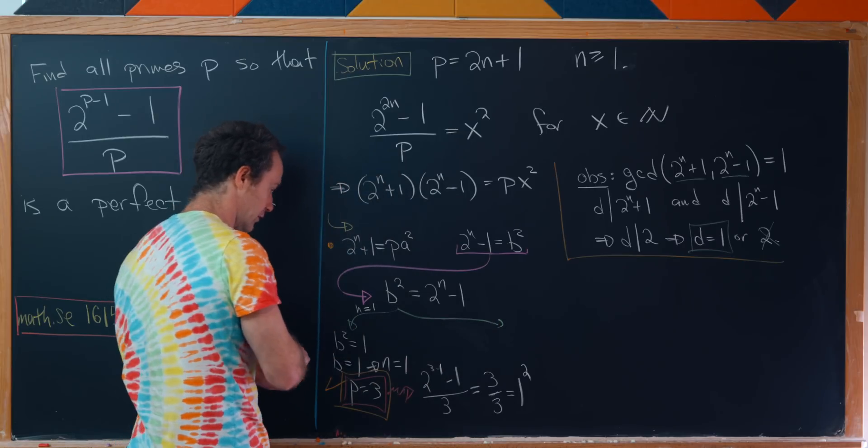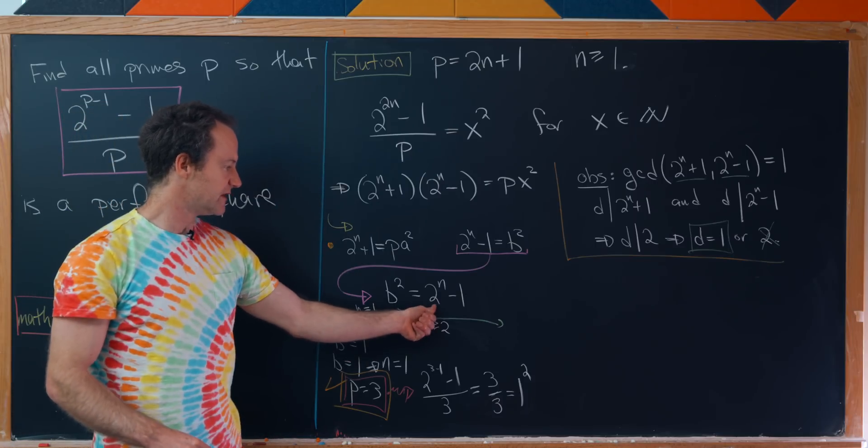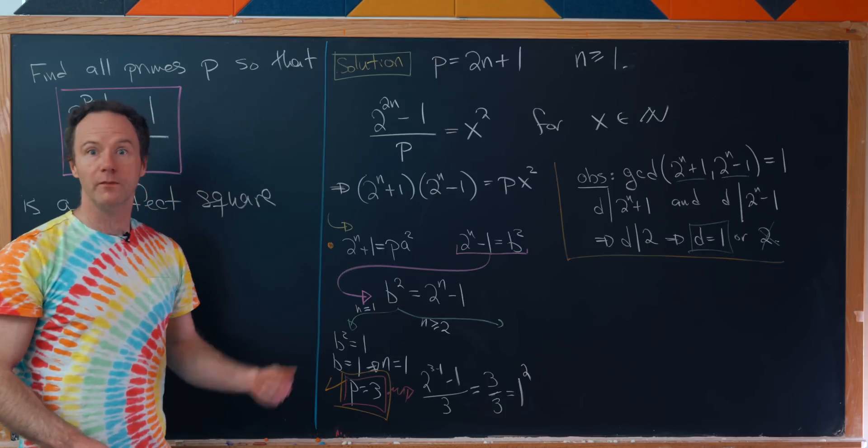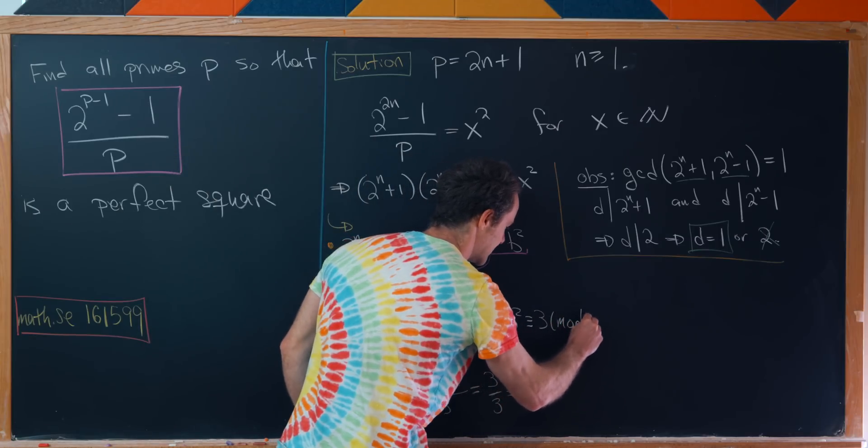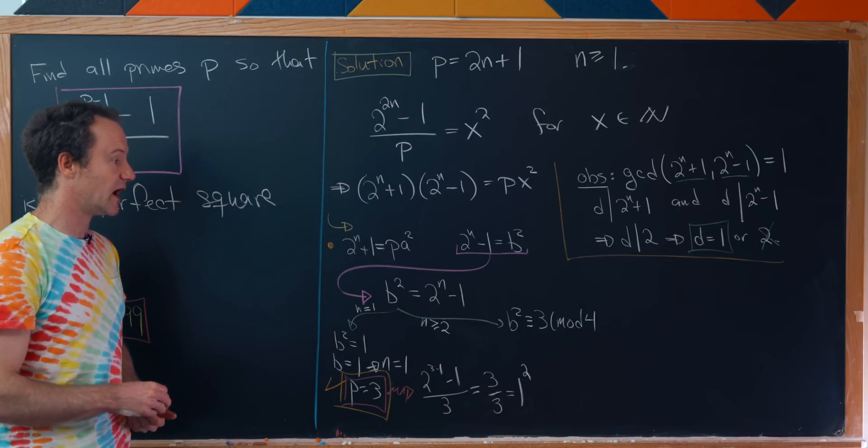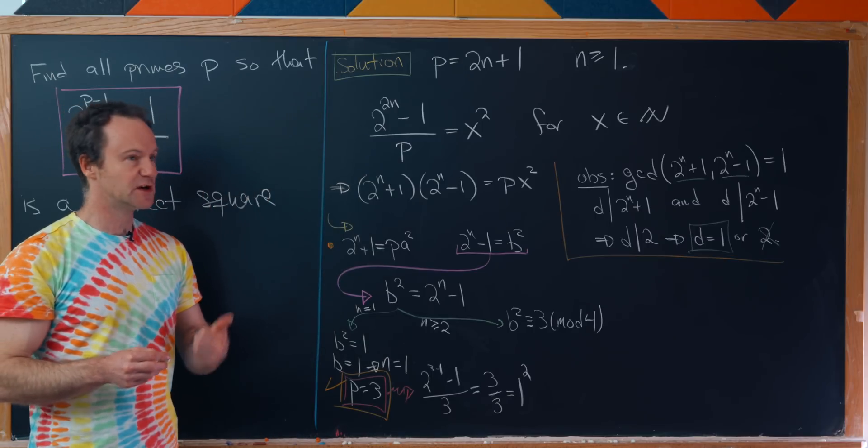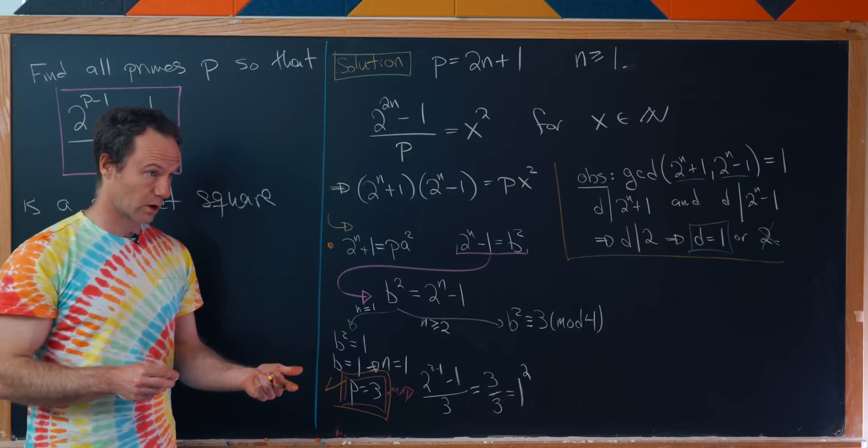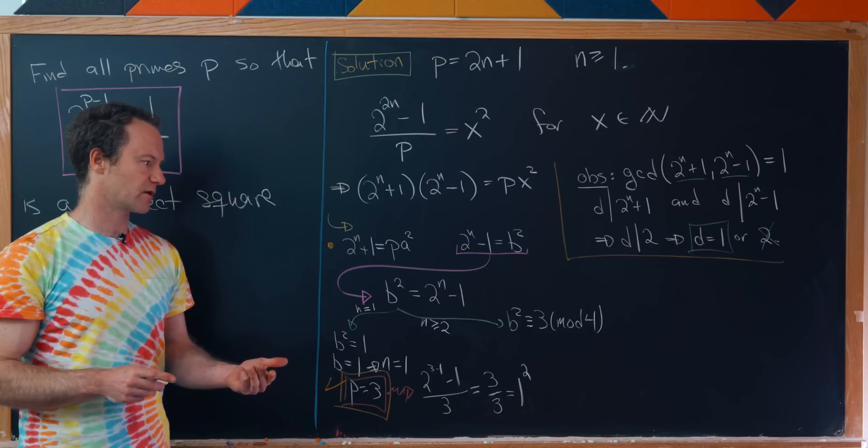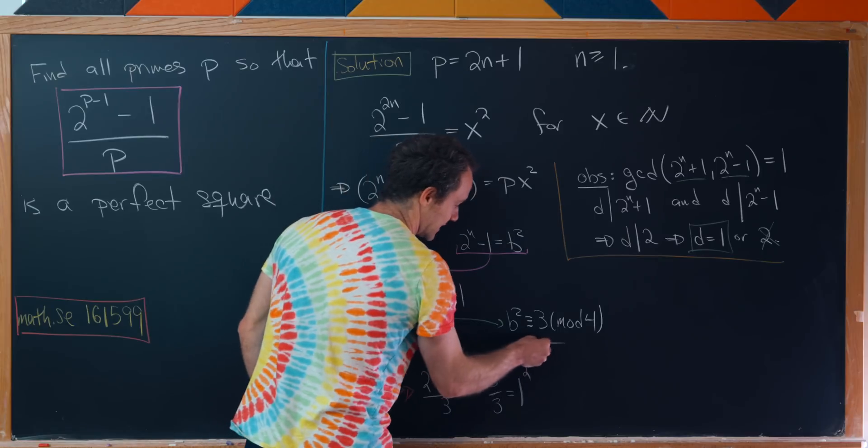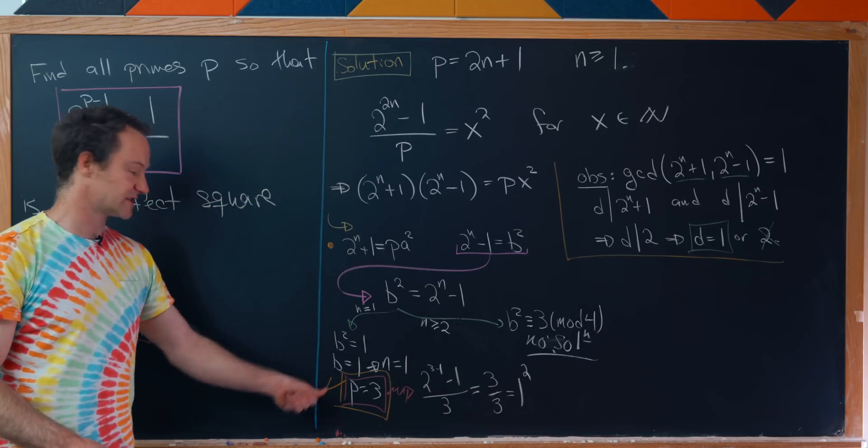Now let's look at the other branching path. The other case is when n is bigger than or equal to 2. If n is bigger than or equal to 2, then 2^n is a multiple of 4. We can reduce mod 4 and we'll see that b^2 is congruent to -1 mod 4, which is the same as 3 modulo 4. But that's impossible. 3 is not a perfect square mod 4. You can check: 0^2 is 0, 1^2 is 1, 2^2 is 0 mod 4, 3^2 is 1 mod 4. Those are all possible residues squared mod 4 and we never achieved 3. So this gives us no solution.